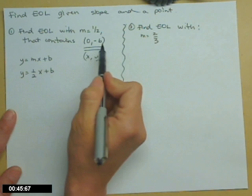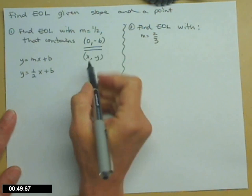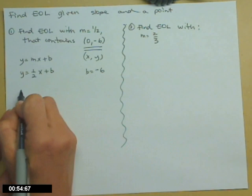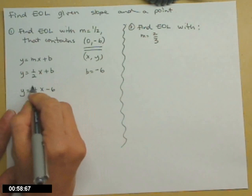Or you can recognize that if x is 0, y is -6—that's exactly what the definition of y-intercept is. So y equals 1/2 x minus 6.